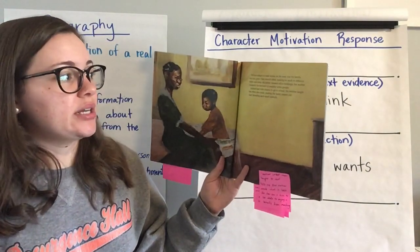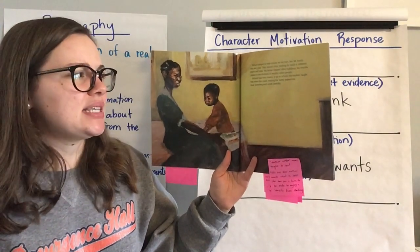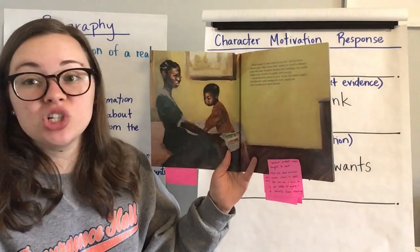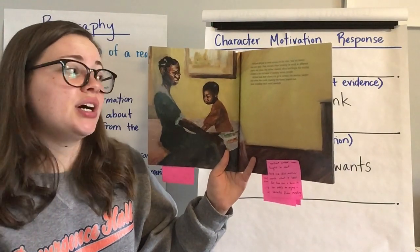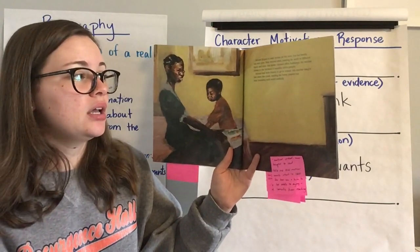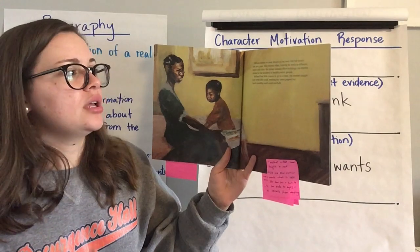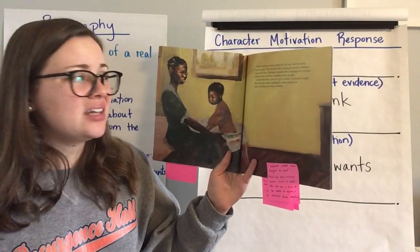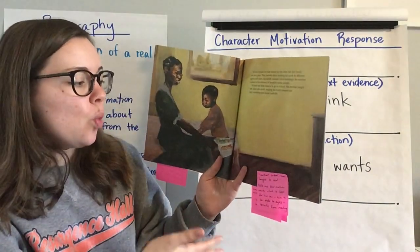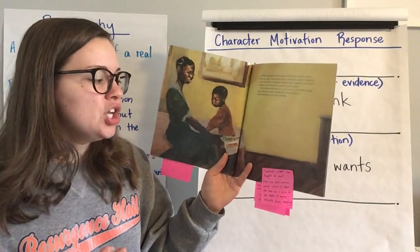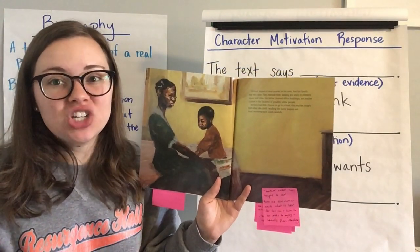Richard longed to read stories on his own, but his family was very poor. They moved often, looking for work in different towns and cities. His father cleaned office buildings. His mother cooked in the kitchens of wealthy white people. Richard had little chance to go to school, so his mother taught him when she could, reading the funny papers out loud, sounding each word carefully. This tells us that Richard's mother wanted what was best for her son — she wanted him to enjoy and benefit from reading, which is why she decided to teach him on her own.